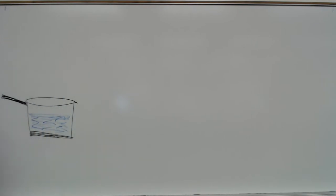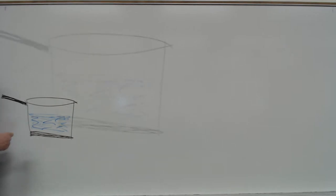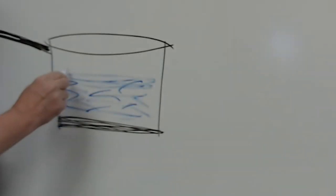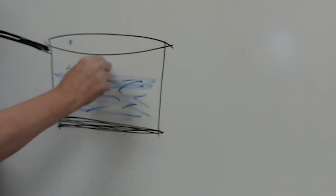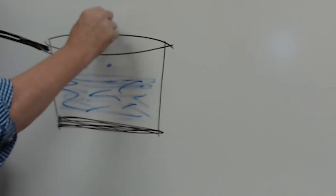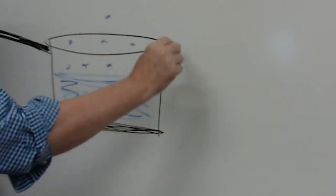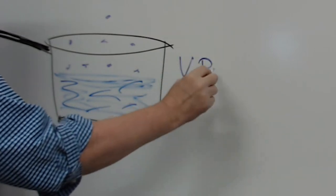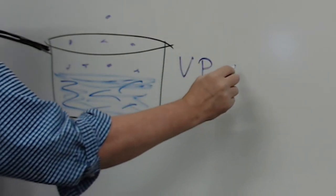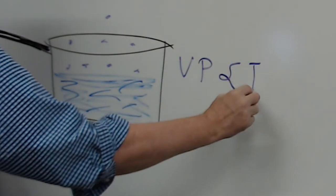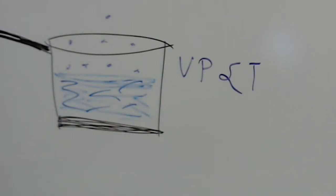First, the concept of how does a liquid boil. All liquids work the same way: every liquid gives off vapor pressure, and the vapor pressure of a given liquid depends on the temperature. So vapor pressure is proportional to temperature for every single liquid.